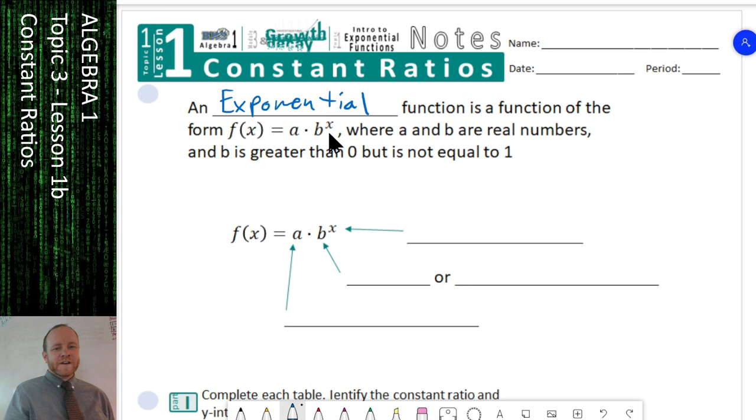This is the general form of it. We have two things, a and b. Linear function, we had y equals mx plus b, so we had m and b. They can both be real numbers, pretty much any number, except for b. It cannot be less than 0, so it can't be negative, and it cannot be equal to 1.